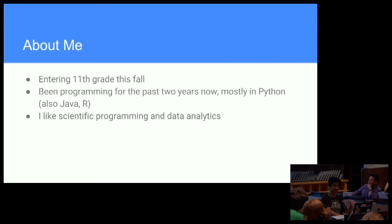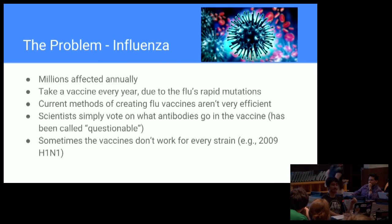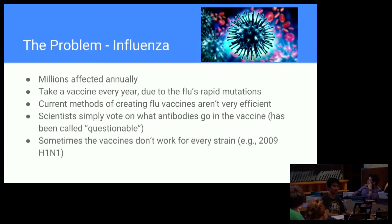Today I'll be talking about one such project. So let me start with the problem, which is the flu. Millions are affected worldwide, and there currently isn't a great way for scientists to make vaccines for the flu. They just vote on what drugs and antibodies should go into the flu vaccine for that year, and this practice has been called questionable by the National Institutes of Medicine. Sometimes the vaccines don't always work — if you remember in 2009, there was a worldwide pandemic of the H1N1 flu virus.